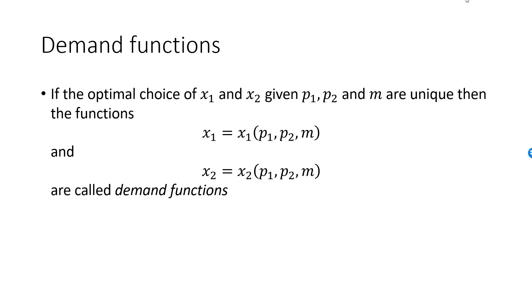In some cases, for example if preferences are well-behaved, we know that the optimal choice is unique. If this is the case, the optimal choice of x1 and x2 will depend on the three parameters p1, p2, and m, and we can write the optimal choice of x1 and x2 as functions of these parameters.